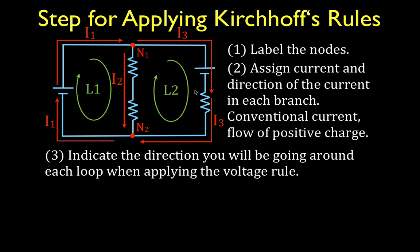We could also say all the way around the outside is loop 3, but for this video we'll just talk about loop 1 and loop 2, going clockwise. When you assign the direction you're going to go around each loop, it's also arbitrary. I chose clockwise and clockwise, but you can choose counterclockwise for both, or one counter and one clockwise — it doesn't matter. It'll come out in the math when we get the sign of the current.